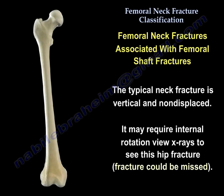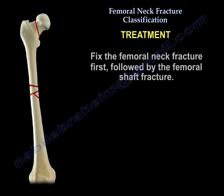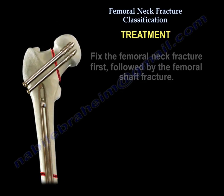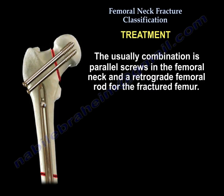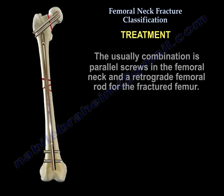Another area of interest is femoral neck fractures associated with femoral shaft fractures. The typical neck fracture is vertical and non-displaced, and may require an internal rotation view X-ray to identify — this fracture can be missed. Treatment of these associated fractures is to fix the femoral neck fracture first, followed by the femoral shaft fracture. The usual combination is parallel screws in the neck and a retrograde femoral rod for the femur fracture.